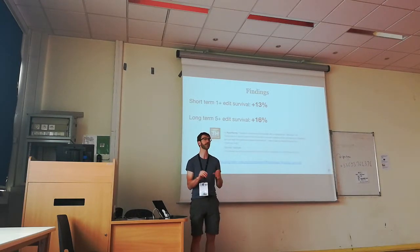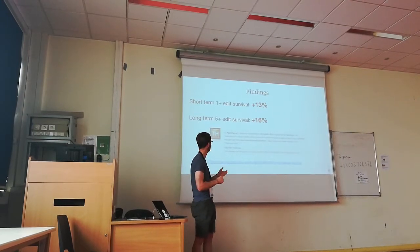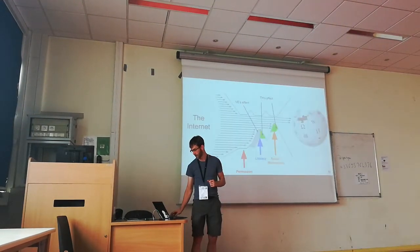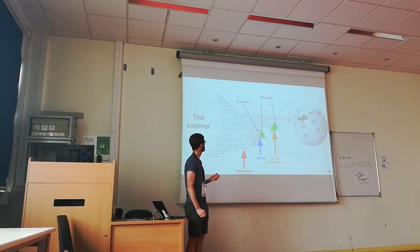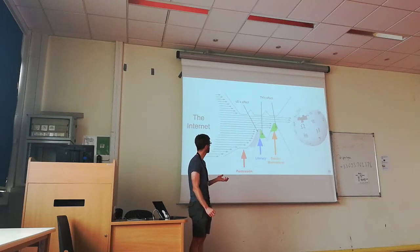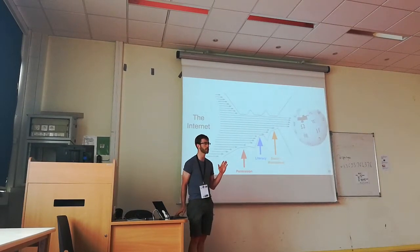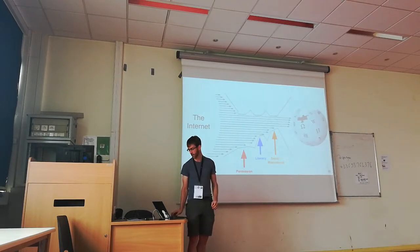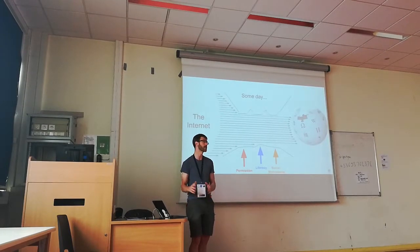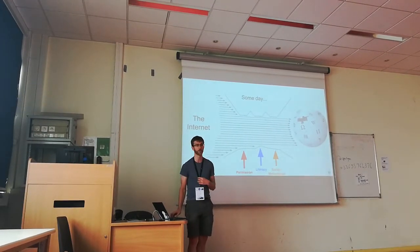Essentially, on the scale of newcomer retention, we saw short-term increases of about 13% and long-term increases of about 16% from receiving an invitation to the Tea House. We think this effect is partly about literacy — the Tea House helps newcomers figure out what prod and AFD are and participate effectively — and partly about social motivational barriers. The reason we see an increase in retention is that we're actually reducing a stream of barriers that allows people to be retained long-term in Wikipedia. Someday if we can reduce these barriers more, we might actually have something closer to the ideal, though we're not quite sure we'll get there anytime soon.